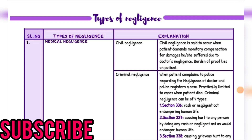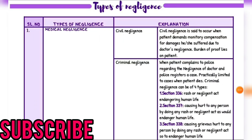Next portion is types of negligence. First is medical negligence, which has two types: civil negligence and criminal negligence. Civil negligence is said to occur when a patient demands monetary compensation for damage he or she suffered due to the doctor's negligence. Burden of proof lies on the patient.